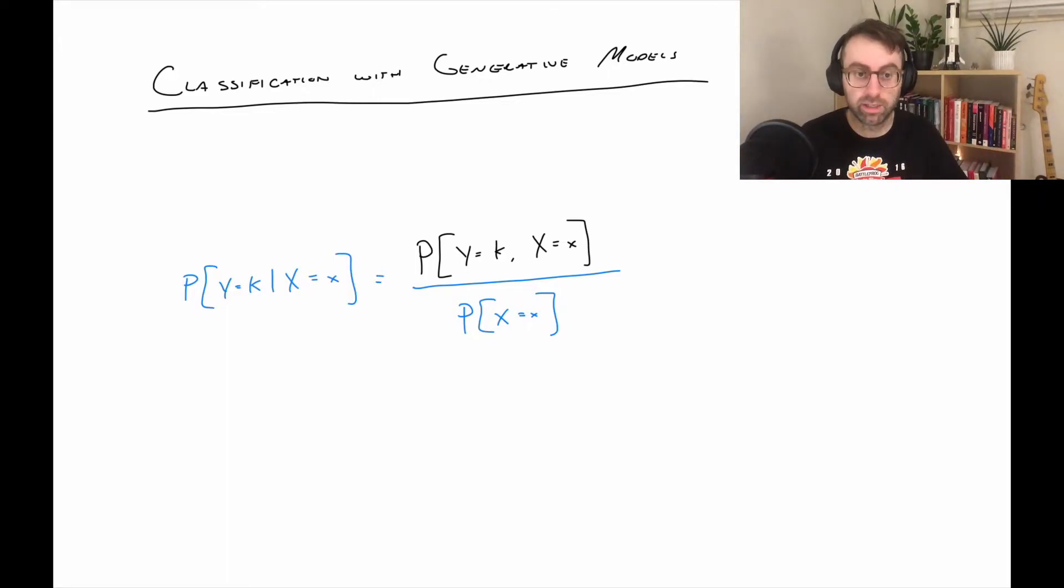So just applying the definition of conditional probability, we can get to the quantity that we need, right? So, once we're here, we know what to do. The question is, how do we get there? And the first question is, how to model this?